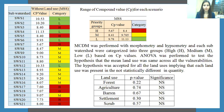After defining each subwatershed's soil erosion vulnerability class, ANOVA was performed to test the hypothesis that the mean land use was the same across all vulnerability classes. The hypothesis was accepted for all land uses, implying that each land use present in the watershed was not statistically different in quantity across vulnerability classes.